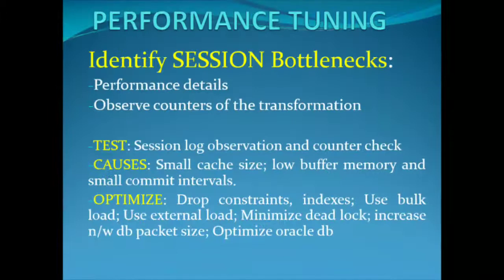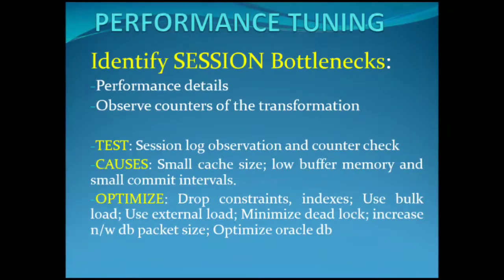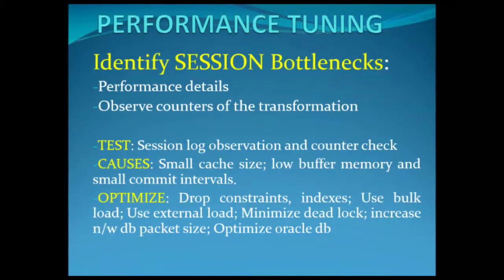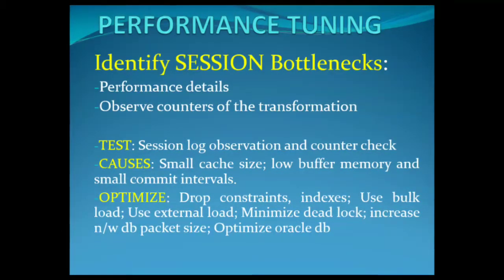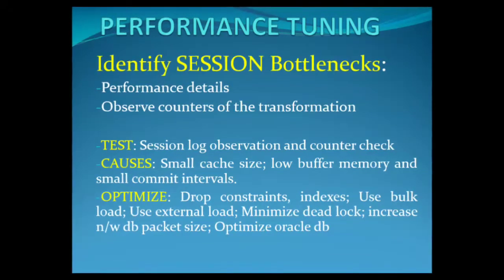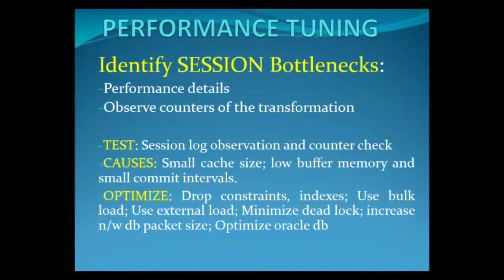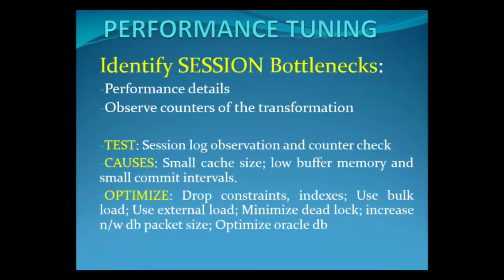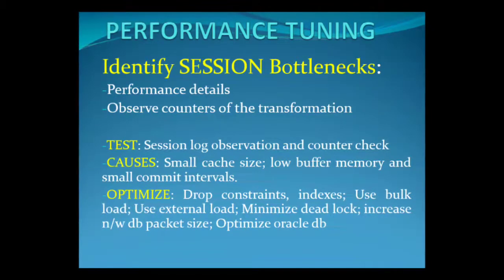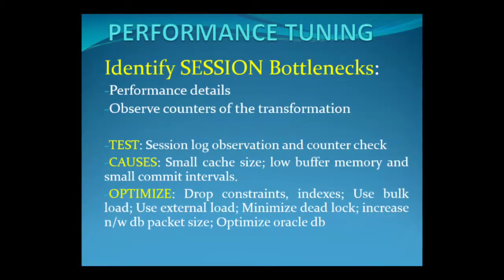Once source, target, and mapping bottlenecks are addressed, look at session bottlenecks. Identify them using performance details — the Integration Service creates performance details when you enable the 'Collect Performance Data' property. Performance details display information about each transformation, including basic counters for input rows, output rows, and error rows. General causes include small cache size, low buffer memory, and small commit intervals. All transformations have counters such as read from disk, write to disk, rows in lookup cache, and error rows.